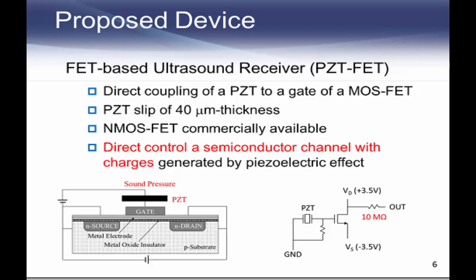We used a PGT-FET of 40 μm thickness and an NMOS-FET commercially available, and tuned the size and dielectric constant of PGT-FET so the observation is optimized. PGT-FET is characterized by directly controlling semiconductor channels with charges generated by the piezoelectric effect, and is assembled to detect ultrasound with high sensitivity and wide bandwidth by its amplification. The output was observed by drain current of this FET.